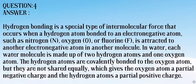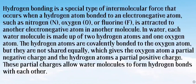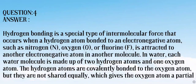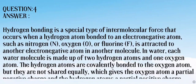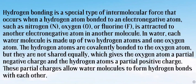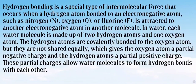Next, question number four: define hydrogen bonding in water and explain the anomalous behavior of water due to hydrogen bonding. Hydrogen bonding is a special type of intermolecular force that occurs when a hydrogen atom bonded to an electronegative atom such as nitrogen, oxygen, or fluorine is attracted to another electronegative atom in another molecule. In water, each molecule is made up of two hydrogen atoms and one oxygen atom. The hydrogen atoms are covalently bonded to oxygen but electrons are not shared equally, giving oxygen a partial negative charge and hydrogen a partial positive charge.